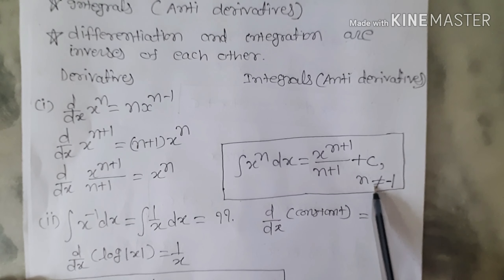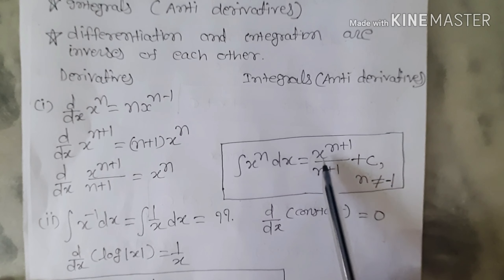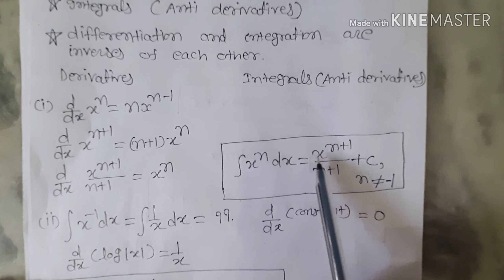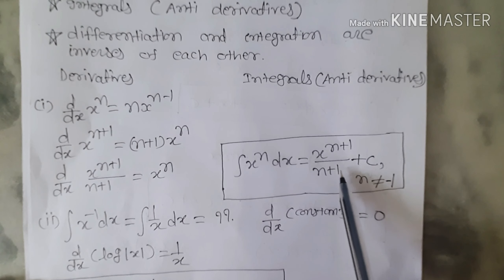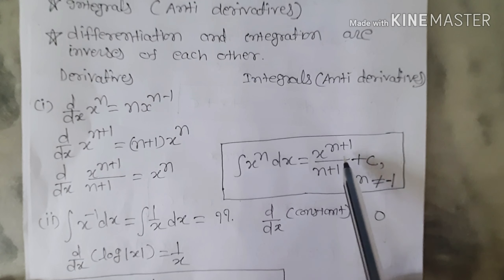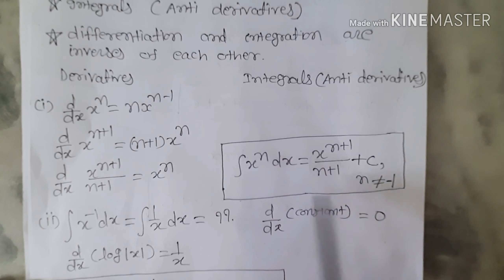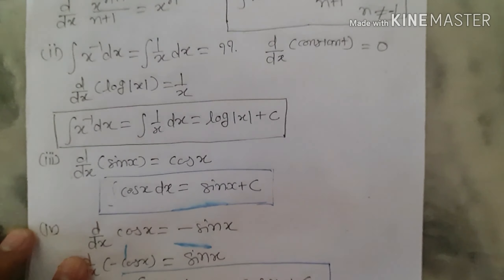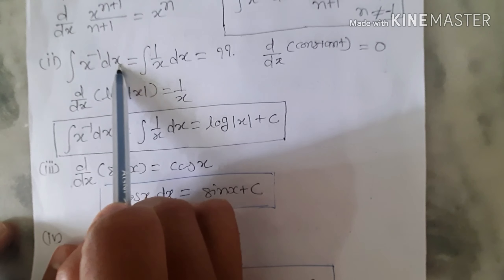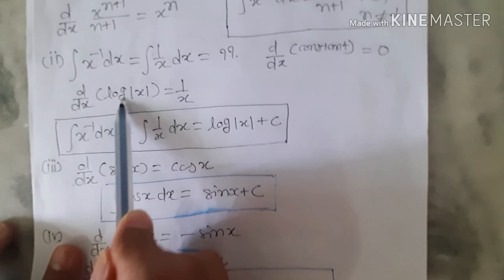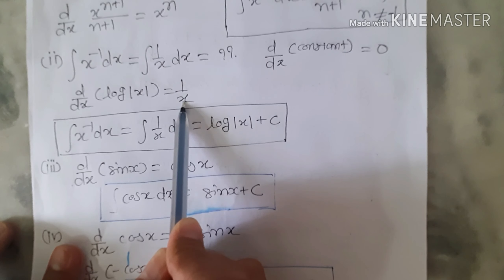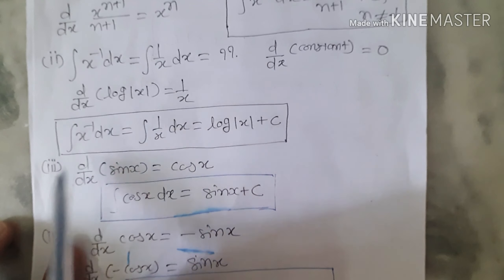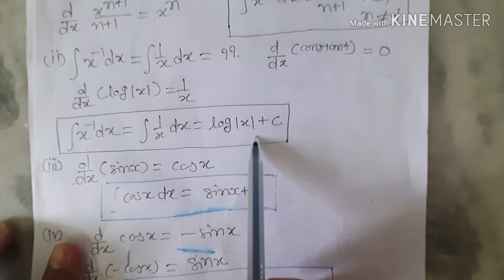This formula is not applicable for n equals -1. If we put n = -1, the right-hand side becomes x^0/0, which is undefined. So for finding the integral of x^(-1) dx, we know from differentiation that d/dx of log|x| equals 1/x. So the integral of x^(-1) dx equals log|x| plus c.